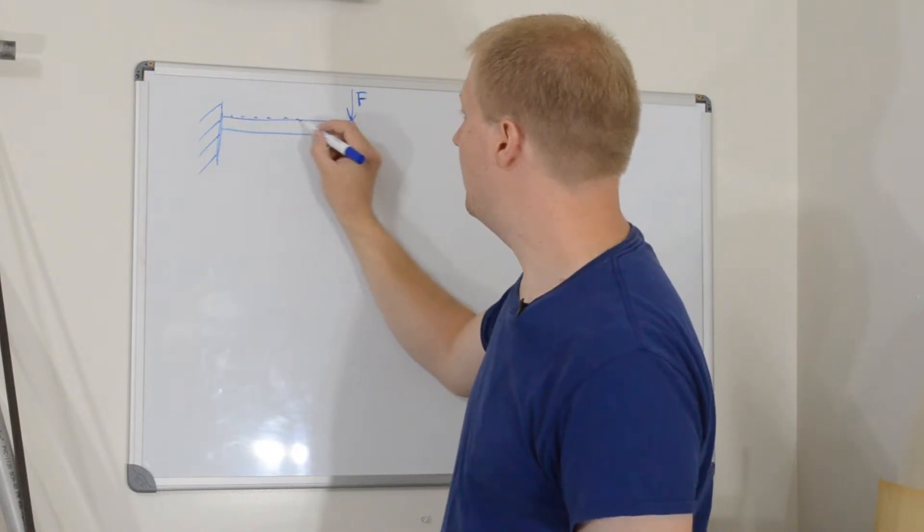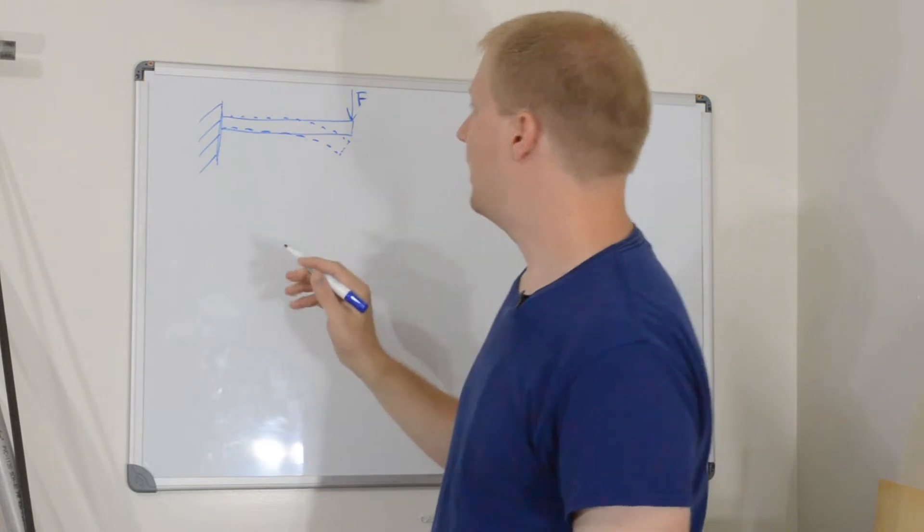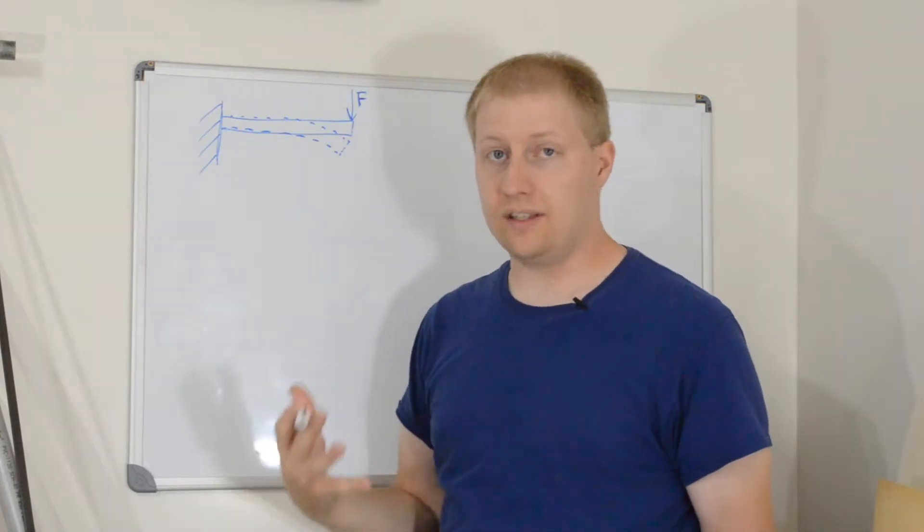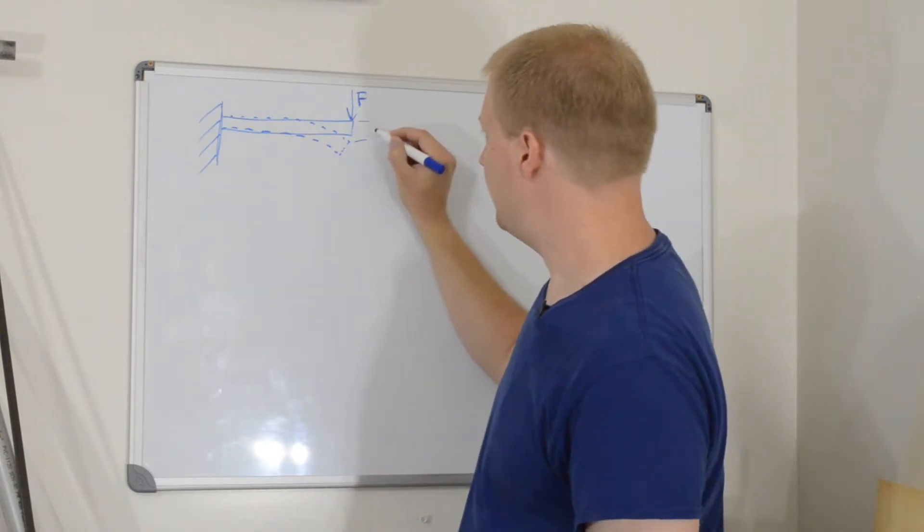the beam is going to deflect, right? No matter how stiff or strong this beam is, it's going to bend some. And we're going to call that distance that it deflects, D.